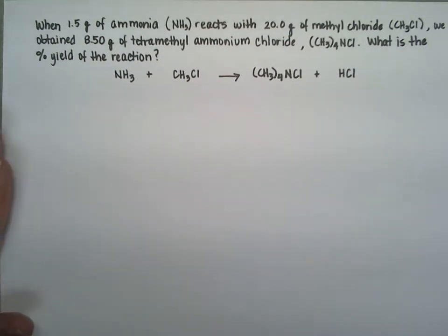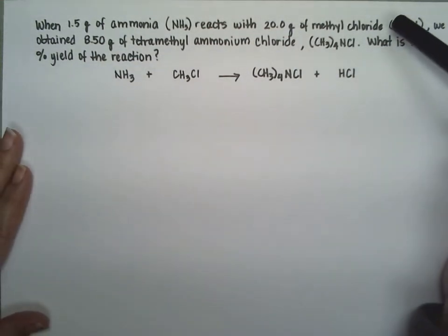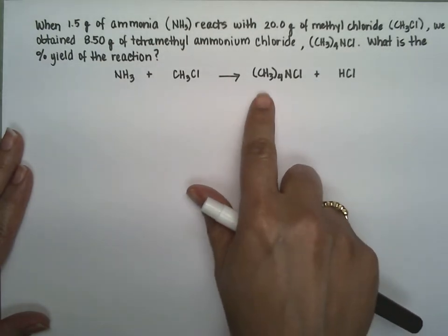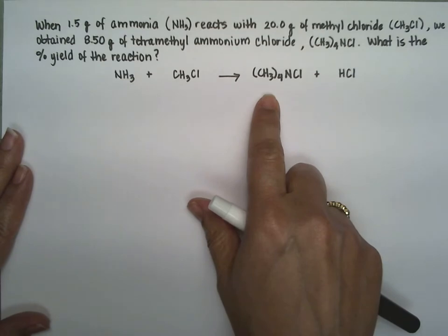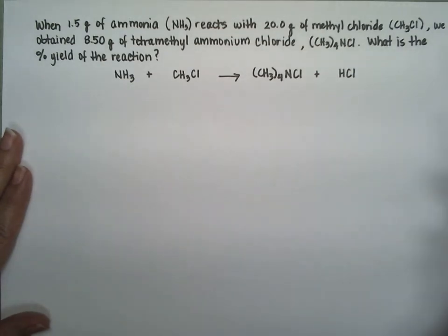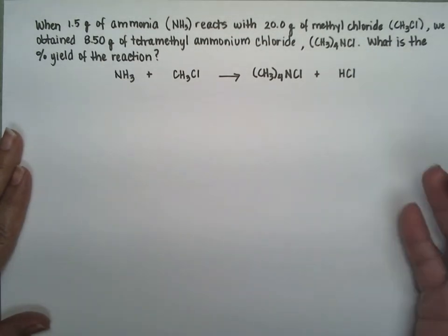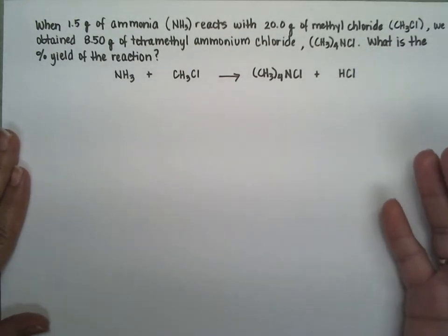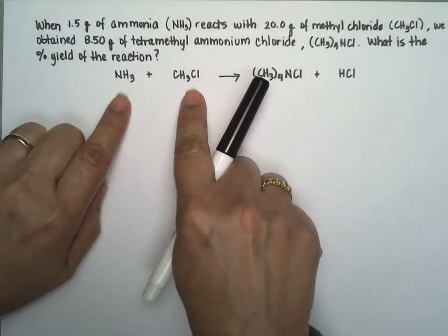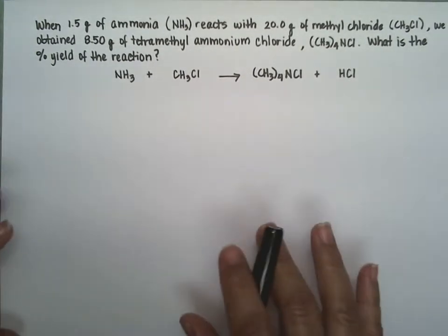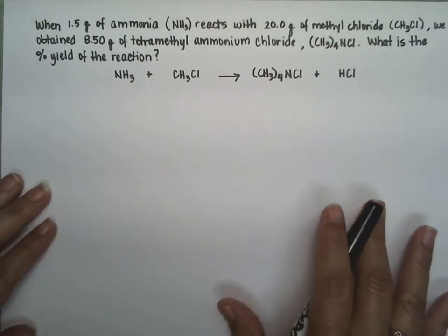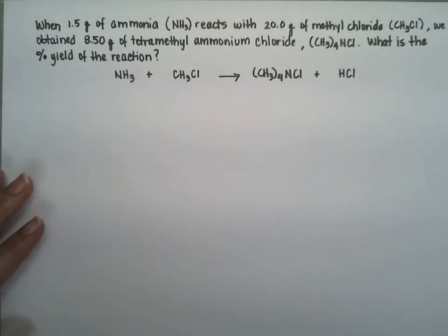When 1.5 grams of ammonia react with 20 grams of methyl chloride, we obtain 8.5 grams of tetramethyl ammonium chloride. We want to calculate the percent yield of the reaction. Since we have two starting materials, we're going to have to calculate the limiting reagent.